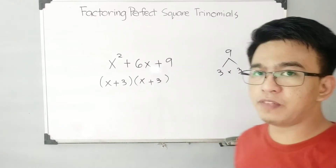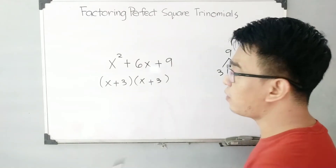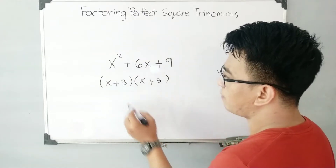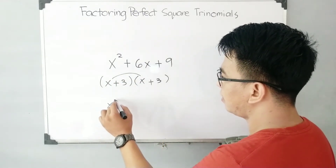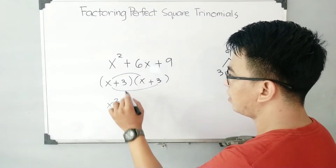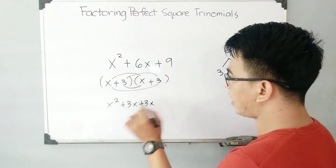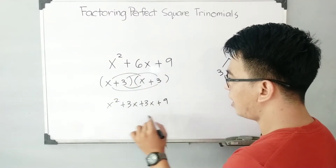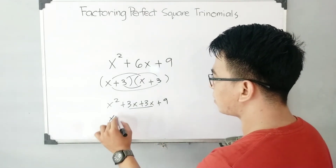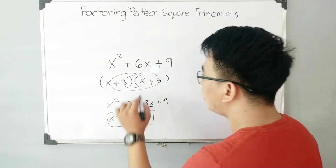So, we can say that the factors of this expression are x plus 3 times x plus 3. To prove that these are the correct factors, we need to do the FOIL method. So: x times x is x squared, x times 3 is plus 3x, 3 times x is also 3x, and 3 times 3 is plus 9. Adding the two middle terms, this gives you x squared plus 6x plus 9. As you can see, our answer is correct.